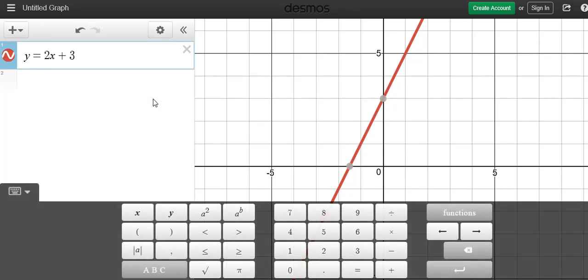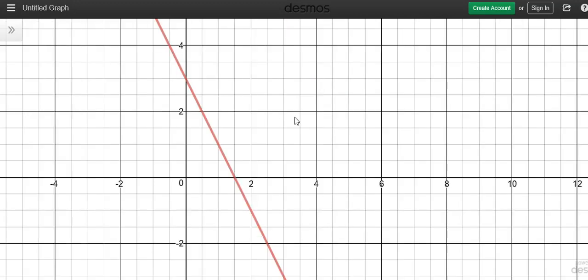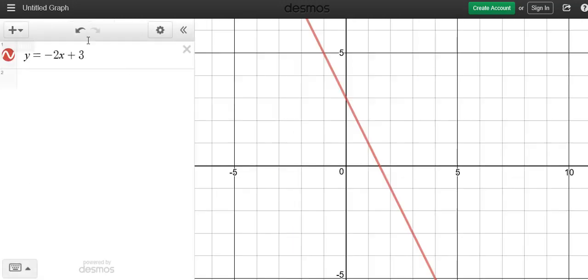If you were to make this negative, suddenly that line becomes like a mirror image. The line goes downwards, that's a negative slope. It starts in the second quadrant, or in the upper left, and it goes down to the fourth quadrant, or it keeps going towards the lower right.